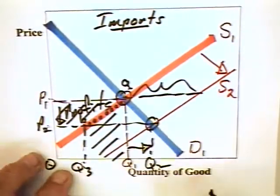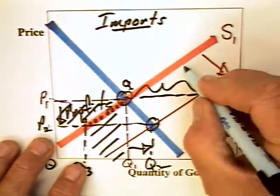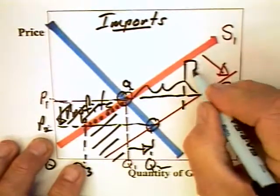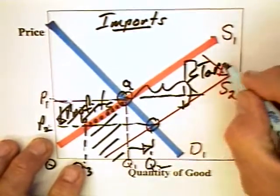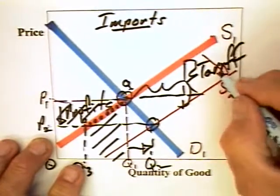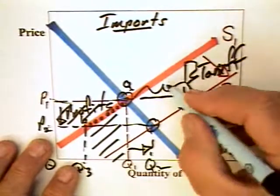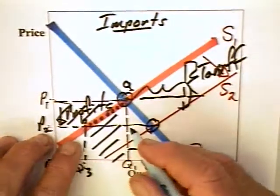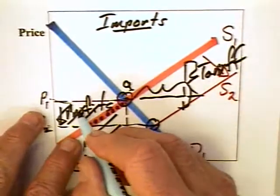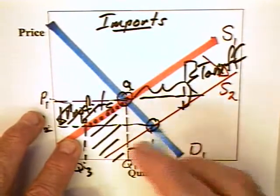Now this means that, of course, that importers would have an incentive to want to impose a tariff on this good. And if they impose a tariff, that means the supply curve will shift back. It means the price will go up and that they can regain these profits. They, of course, have an incentive to have this tariff imposed.